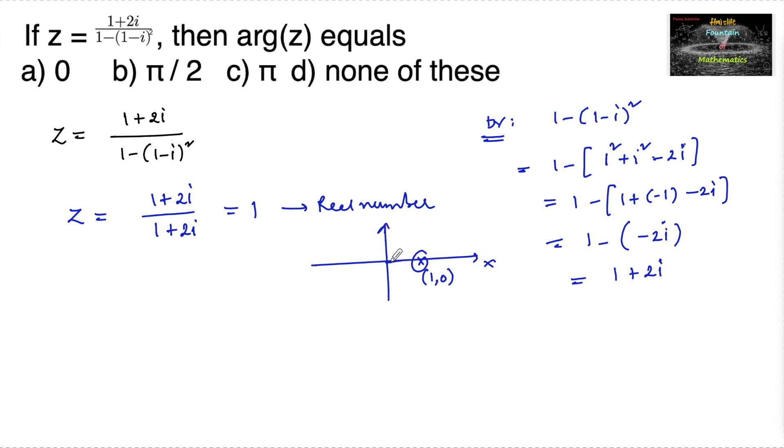So we can consider the argument is only 0. For argument of a complex number which is on positive direction of x-axis is 0. If suppose the complex number is on the negative direction of x-axis, we will be taken pi radians. That's 180 degrees.